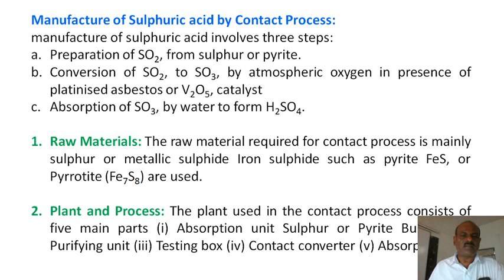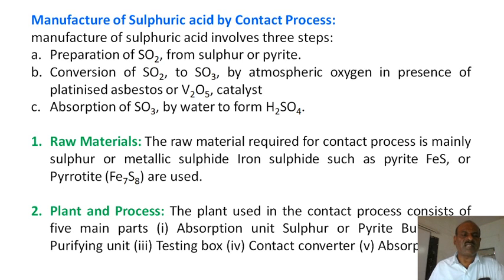You can obtain very good quality sulfuric acid by using platinum as the catalyst and vanadium pentoxide as the catalyst. I also discussed the difference between platinum and vanadium pentoxide as catalysts. Now the different steps for how sulfuric acid is manufactured in the contact process: first, preparation of sulfur dioxide using sulfur or sulfur pyrites as starting material; second, conversion of SO2 to SO3 by atmospheric oxygen in the presence of platinum or vanadium pentoxide catalyst; and third, absorption of SO3 by water to form sulfuric acid.